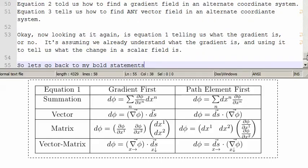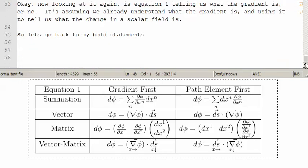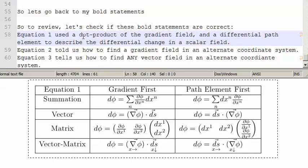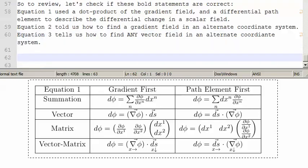So, let's go back to my bold statements and correct them. Equation 1, ctrl c, ctrl v, equation 1 used, equation 1 used a dot product of the gradient field and the differential path element to describe a differential change in a scalar field. Okay, fantastic!